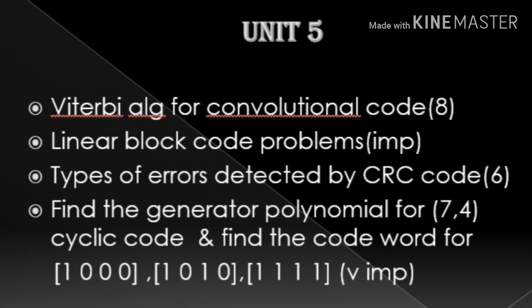Then, Unit 5. There are 2 different things. There are 2 theories. The question is the Viterbi algorithm for convolutional code — if you know the algorithm, that is important. And types of errors detected by CRC code — this is a problem for 6 marks. You will need to know the two types of problem and the generator polynomial for a 7,4 code word, and you will need to know the numbers for the generator polynomial problem with 2 sub-divisions.